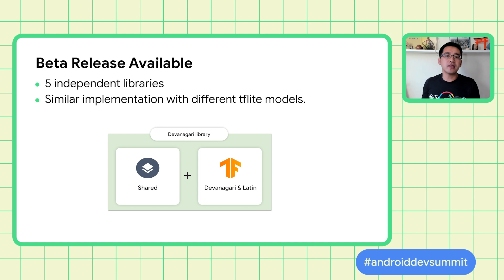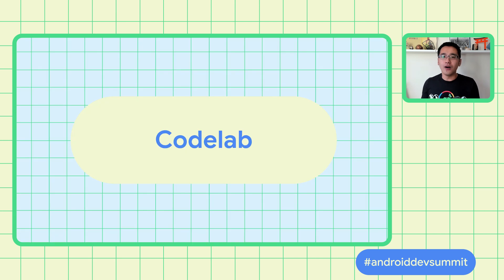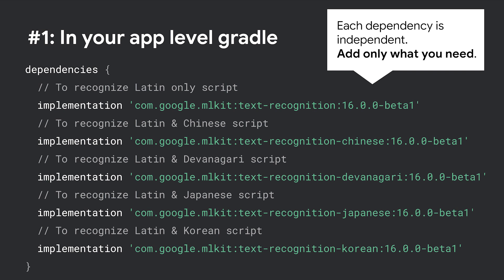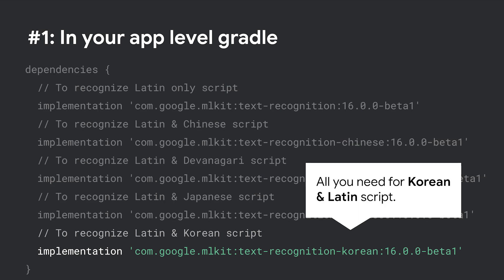With V2, there are five independent libraries corresponding to the five options. The workflows are similar across libraries but with their own TensorFlow Lite model. All ML Kit APIs are designed to be easy to use, and text recognition is no exception. To integrate V2, first add a dependency in the Gradle file. There are five dependencies listed corresponding to the five libraries, each independent of the others, so add only the ones needed. For example, if you only want to support Korean and Latin, only the highlighted dependency is required.